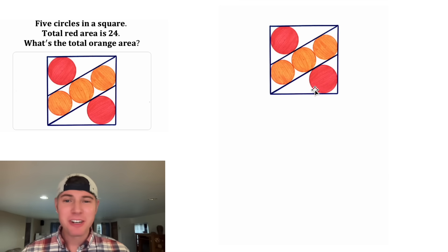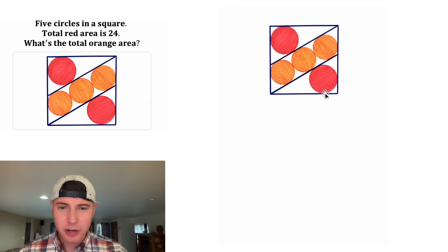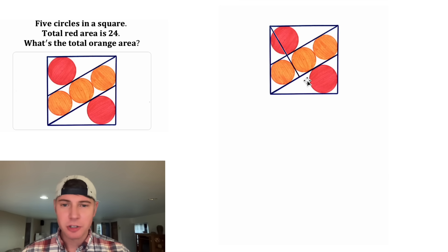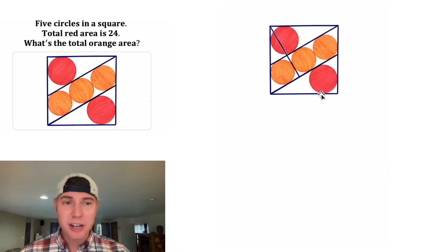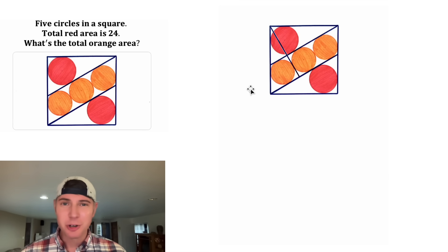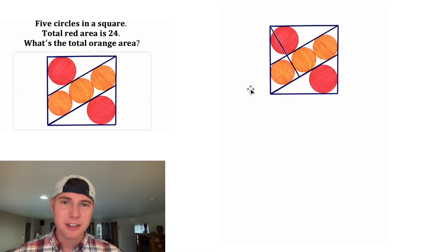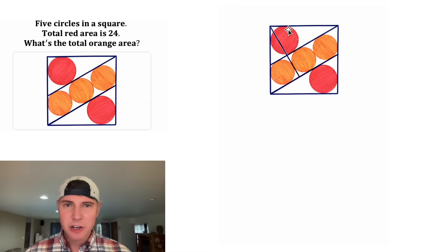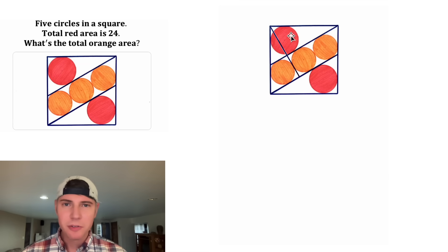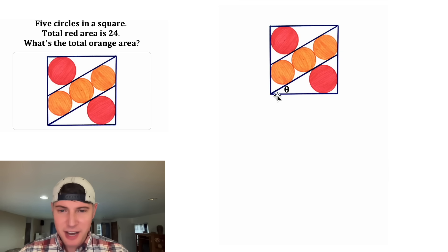I'm pretty sure the way to solve this thing is we wanna look at this triangle right here and the similar triangle right here. One will have an inscribed red circle and one will have an inscribed orange circle. So if we can find the ratio of the areas of the triangles, we can find the ratio of the areas of the circles. And then since we know that the area of each of the red circles is equal to 12, we can figure out the area of each of the orange circles. So first we gotta figure out the size of this angle theta.